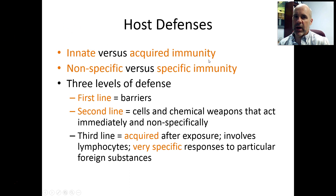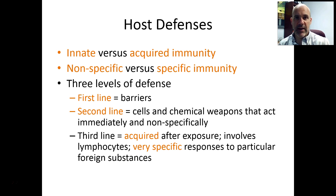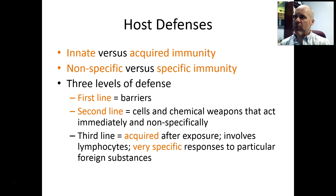Then there's acquired immunity — the more complex part of the immune system, covered in Chapter 13. This is acquired or specific immunity where you don't have this branch of immunity to a particular microorganism until you get exposed to it. For example, you get chickenpox as a kid but don't get it again, because you've acquired immunity to the chickenpox virus after being exposed. That involves cellular weapons, antibodies, and so forth.